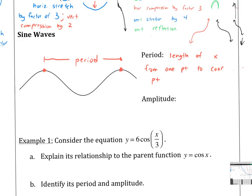Next, amplitude. Amplitude is pretty much how big the wave is — that's the y measure. But it's not the high to low; it's half of that. So the amplitude is one half times (max minus min). This is because the amplitude is just this portion here, and it's replicated underneath the dividing line. So the amplitude is effectively just the distance from the midline to the crest.